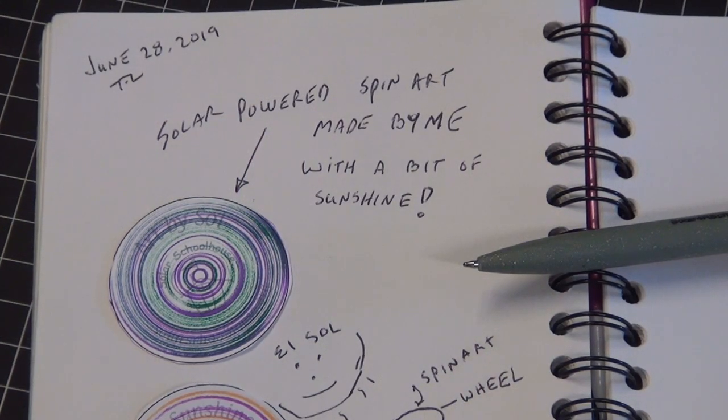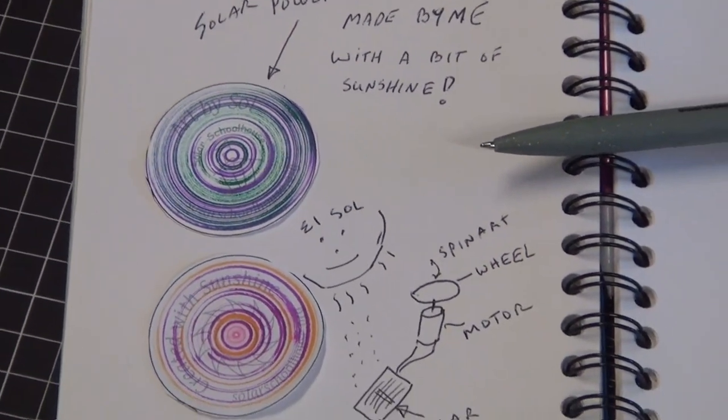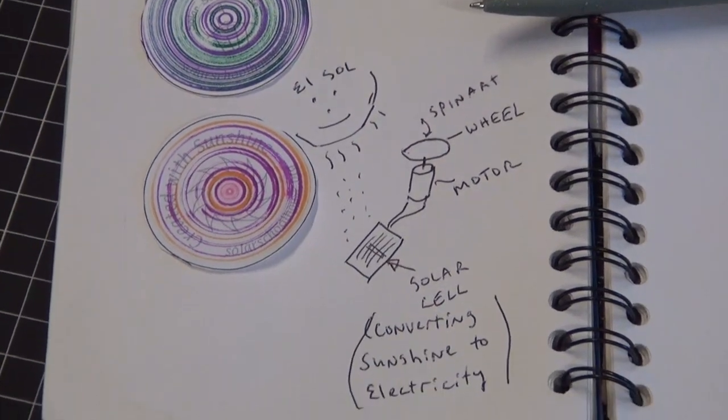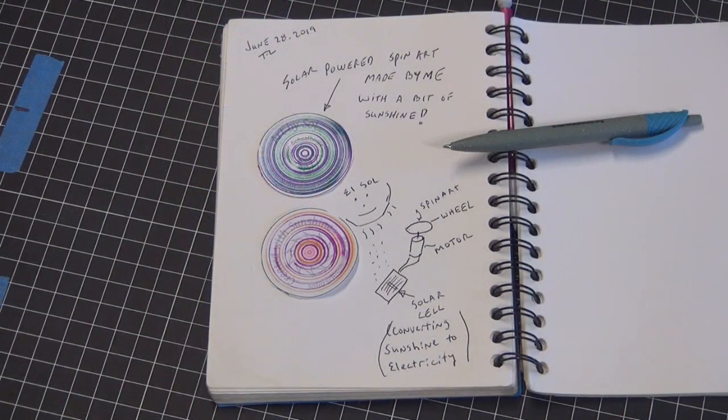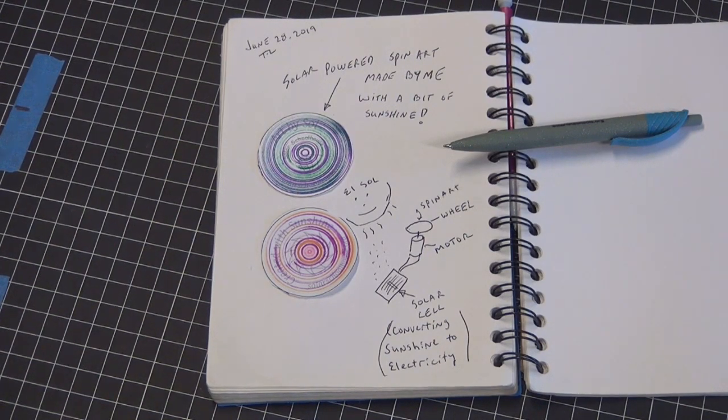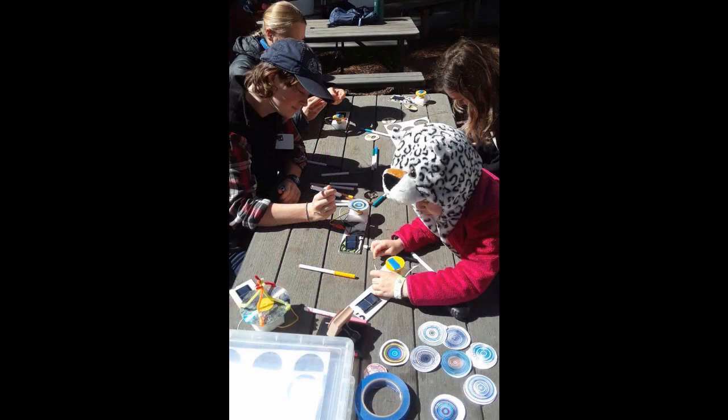When you're finished put your Solar Art in your Nature or Solar Journal and write a few notes about the experience. You can also turn it into a button or a medallion or add to another solar project such as the solar whirly gig or solar carnival project.